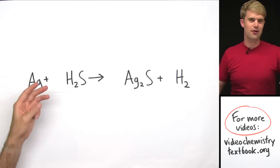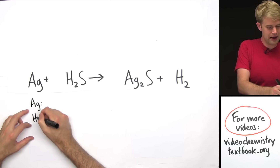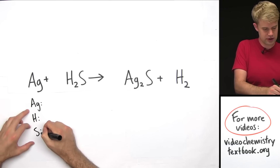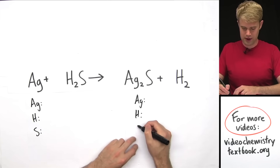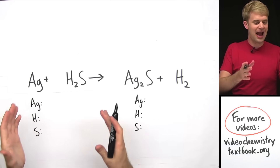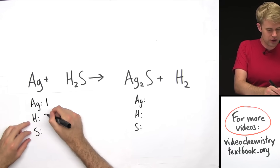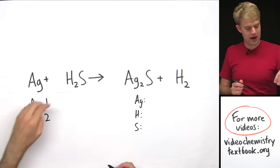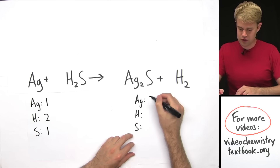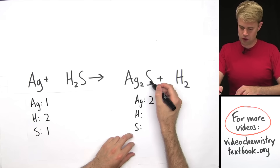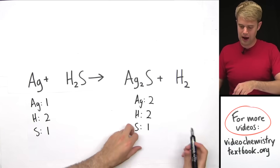In this equation we've got three elements: silver (Ag), hydrogen (H), and sulfur (S), on both sides. Over here we've got one Ag, H₂ so two hydrogen atoms, and S so one sulfur atom. Over here we have Ag₂ so two silvers, one sulfur, and H₂ so two hydrogens.